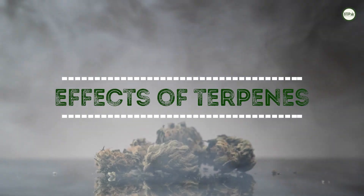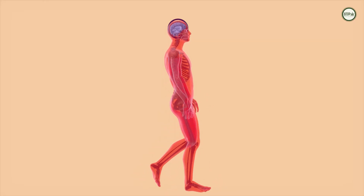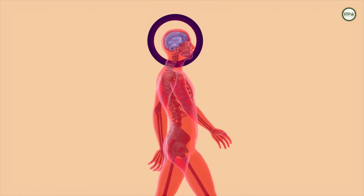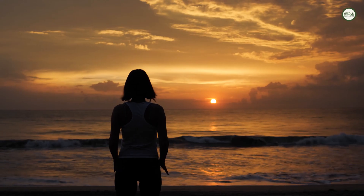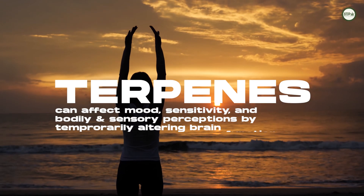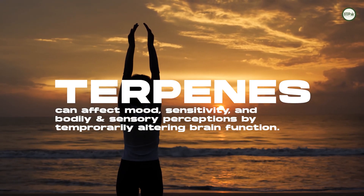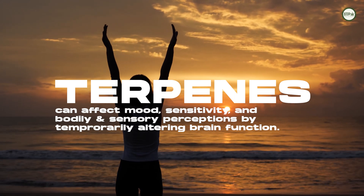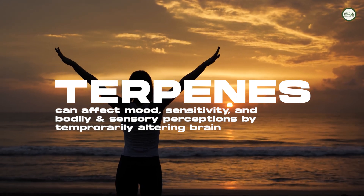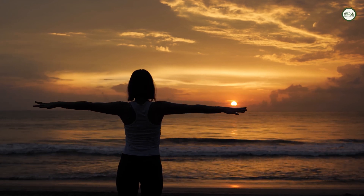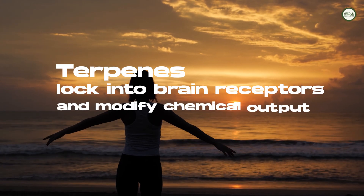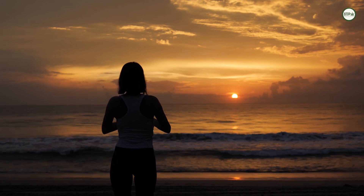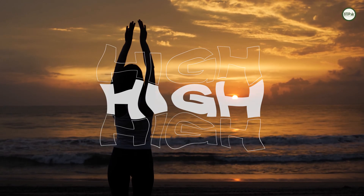What effects do terpenes have? While terpenes have their own effects on the brain, they also alter the effects of THC. Terpenes can affect mood, sensitivity, perception of the senses, and bodily perceptions like balance and pain by temporarily altering brain function. As terpenes lock into receptor sites in the brain and modify their chemical output, some terpenes may affect the feeling of being high.